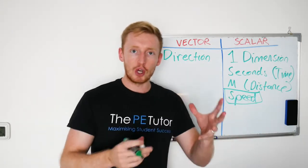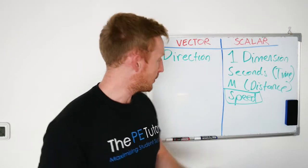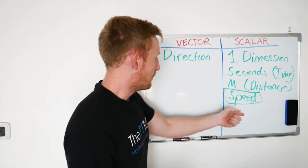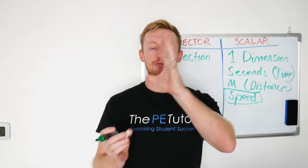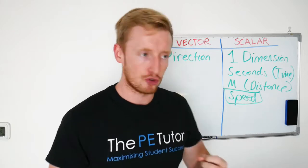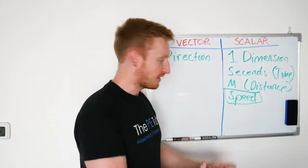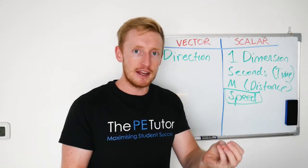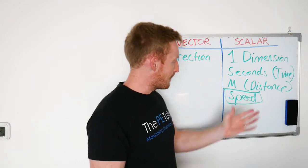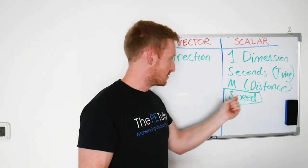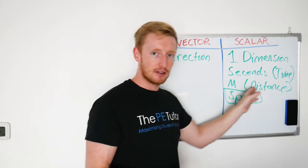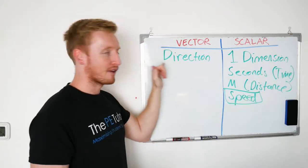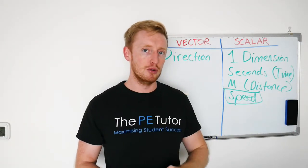Because speed doesn't rely on a direction. Someone could be zigzagging, someone could be going around in circles, a ball could be affected by the forces of wind or drag — that doesn't matter, that doesn't impact the measure of speed. All we care about is how many units of distance are covered in however many units of time. We're not worrying about the direction that it's currently moving.